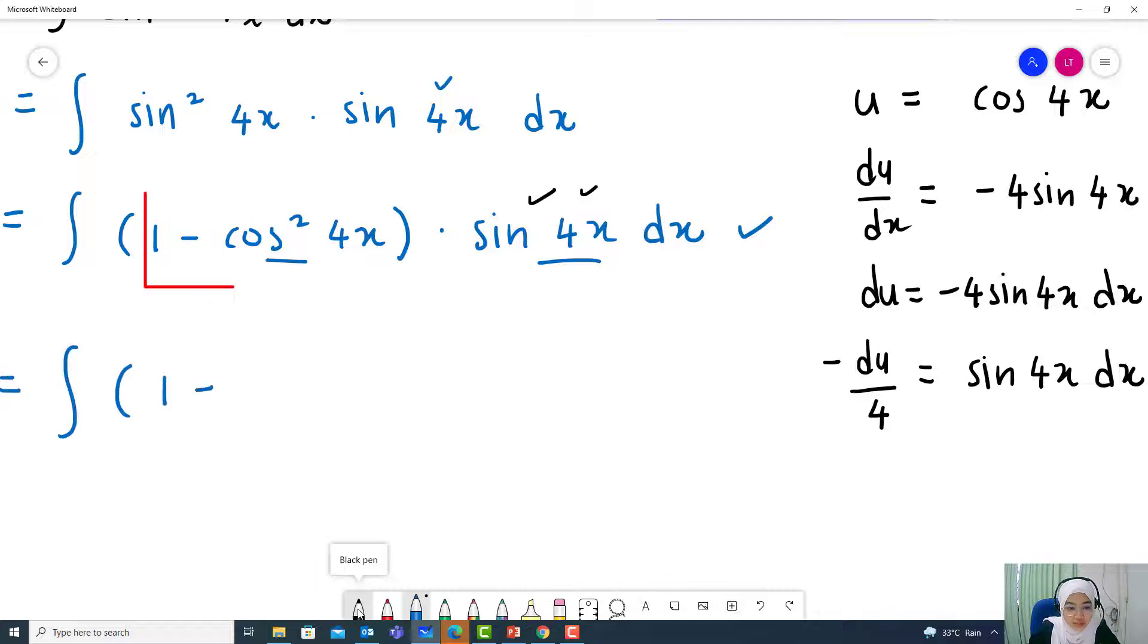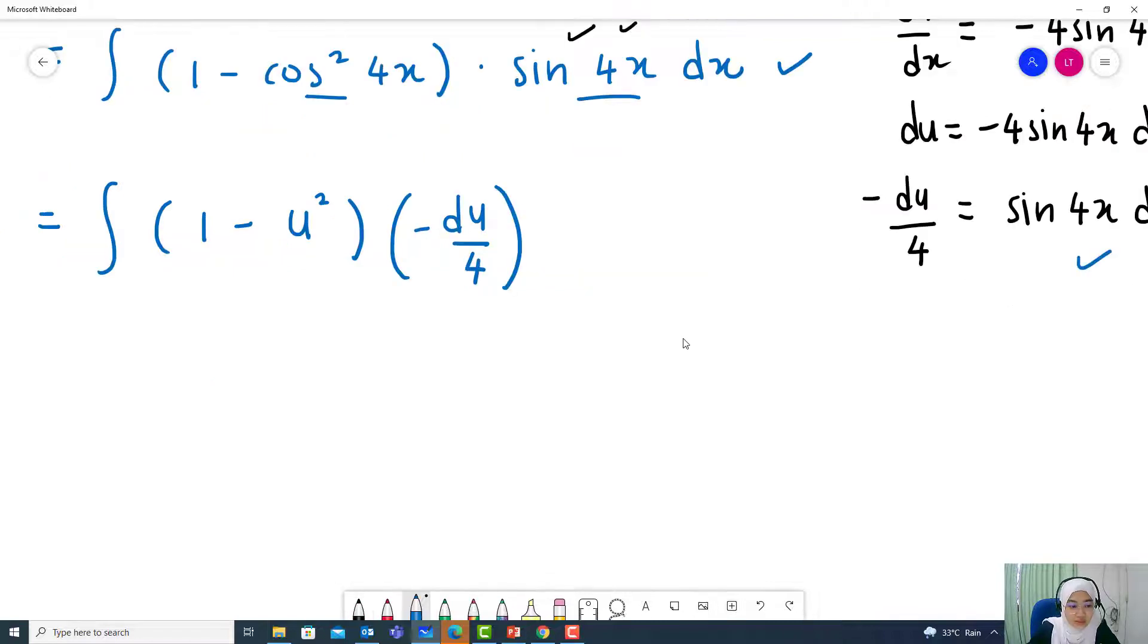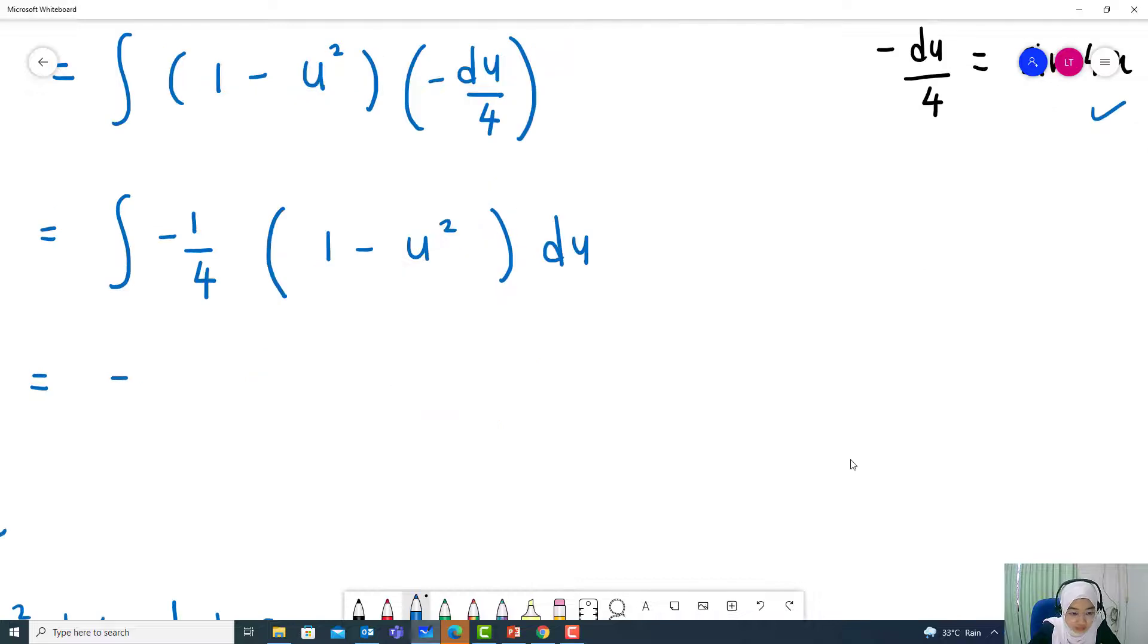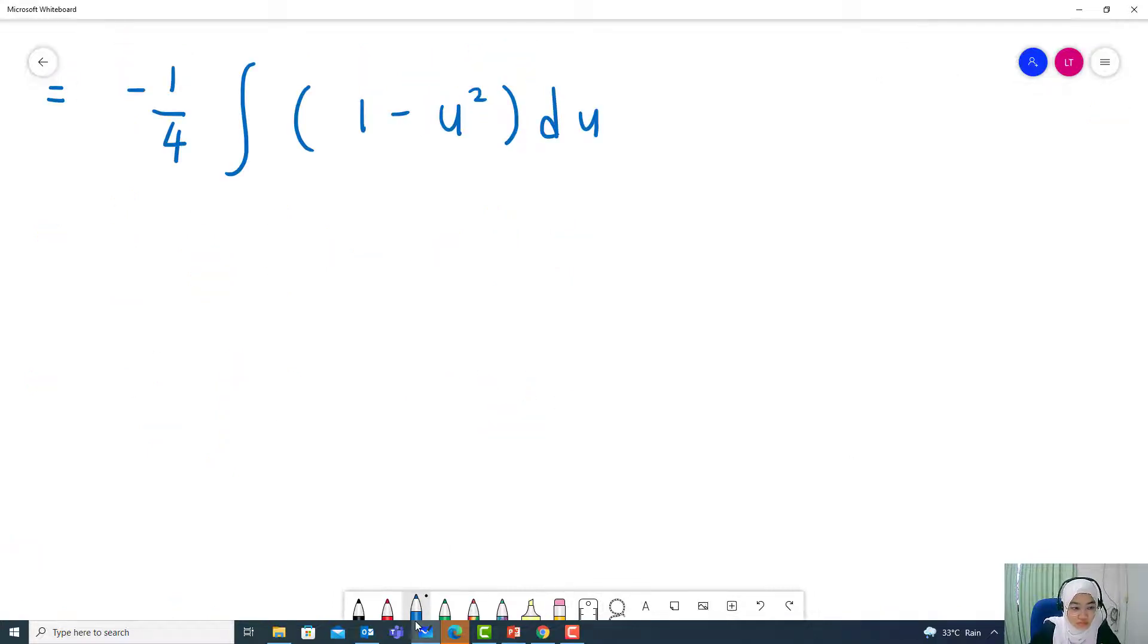Therefore, integrals 1 minus cos squared 4x here is equal to u, so u squared. And then multiply sin 4x dx. Sin 4x dx is negative du over 4. Open bracket 1 minus u squared du equal to integrate negative 1 over 4, integral 1 equal to u, u squared equal to u cubed divided by 3 plus c. And don't forget to replace u in terms of x.